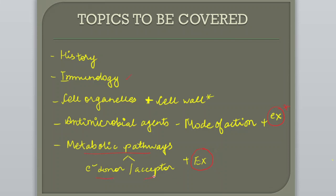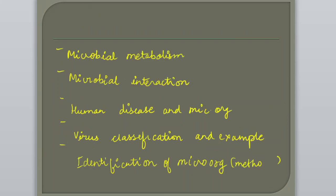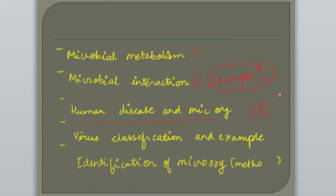You need to know about electron donors and electron acceptors, which can be learned through a chart or MCQs. Next topic is microbial metabolism, followed by microbial interactions — commensalism, parasitism, mutualism — and their examples. Examples are very important, so don't just learn the theory; revise the examples also. Next is human diseases and the microorganisms involved — whether bacterial, fungal, or viral infections, including nosocomial infections and those caused by opportunistic microorganisms.